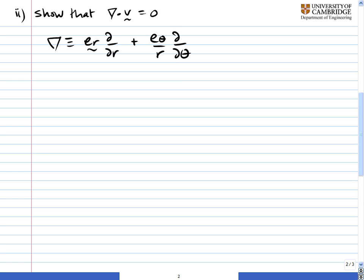So the del is defined as e_r d by dr plus e_theta over r d by dθ. And if you ever get confused about where to put the 1 over r in this sort of thing, just note that the two sides have to be dimensionally consistent.